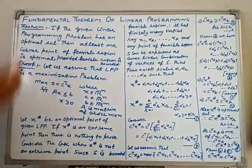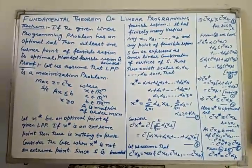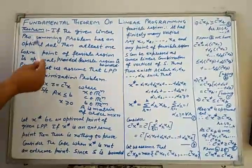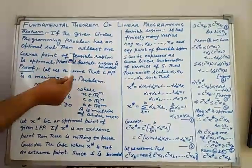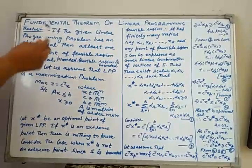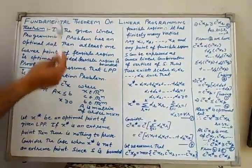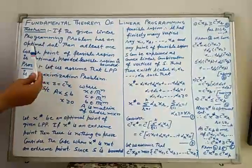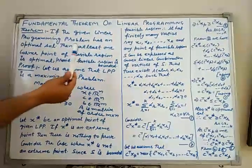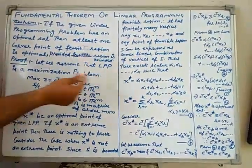Today I am going to discuss the Fundamental Theorem of Linear Programming, which is the most important theorem of linear programming. The statement of the theorem is: if the given linear programming problem has an optimal solution, then at least one corner point of the feasible region is optimal, provided the feasible region is bounded. This corner point is also called a vertex or extreme point.